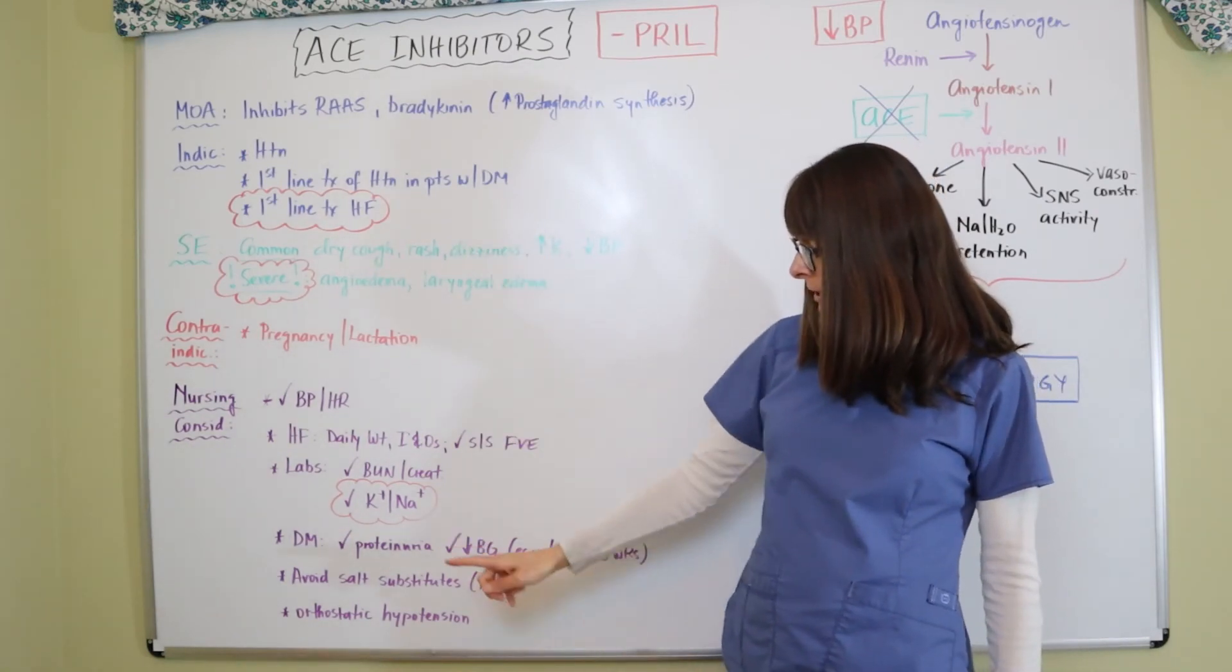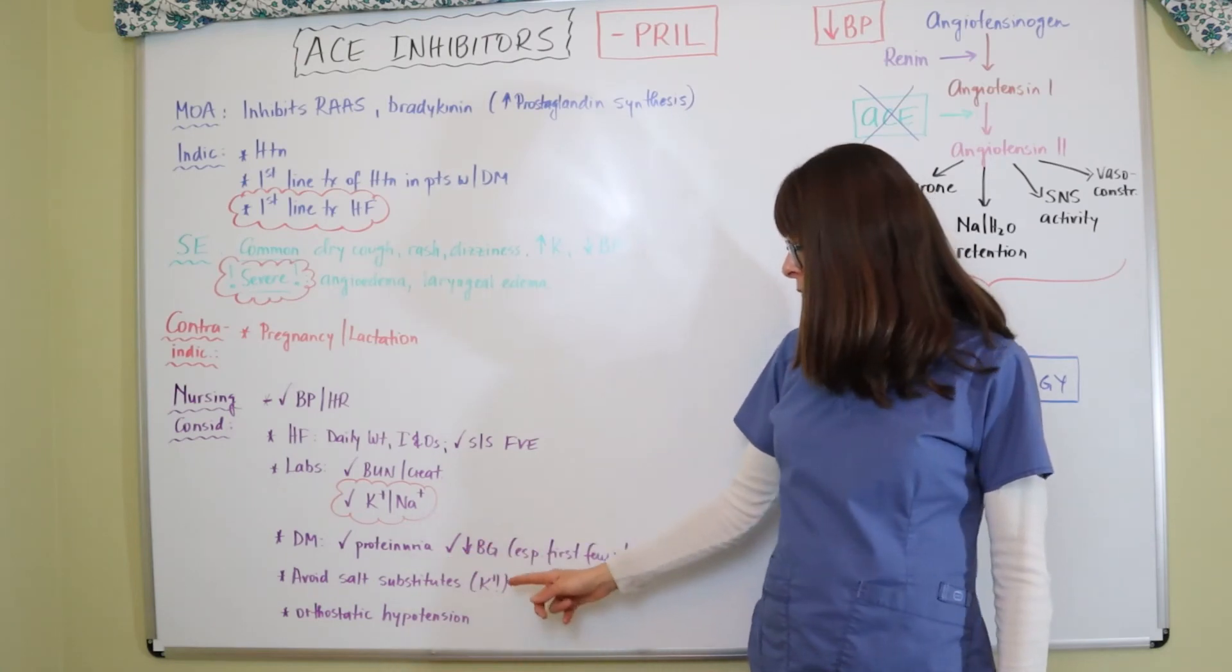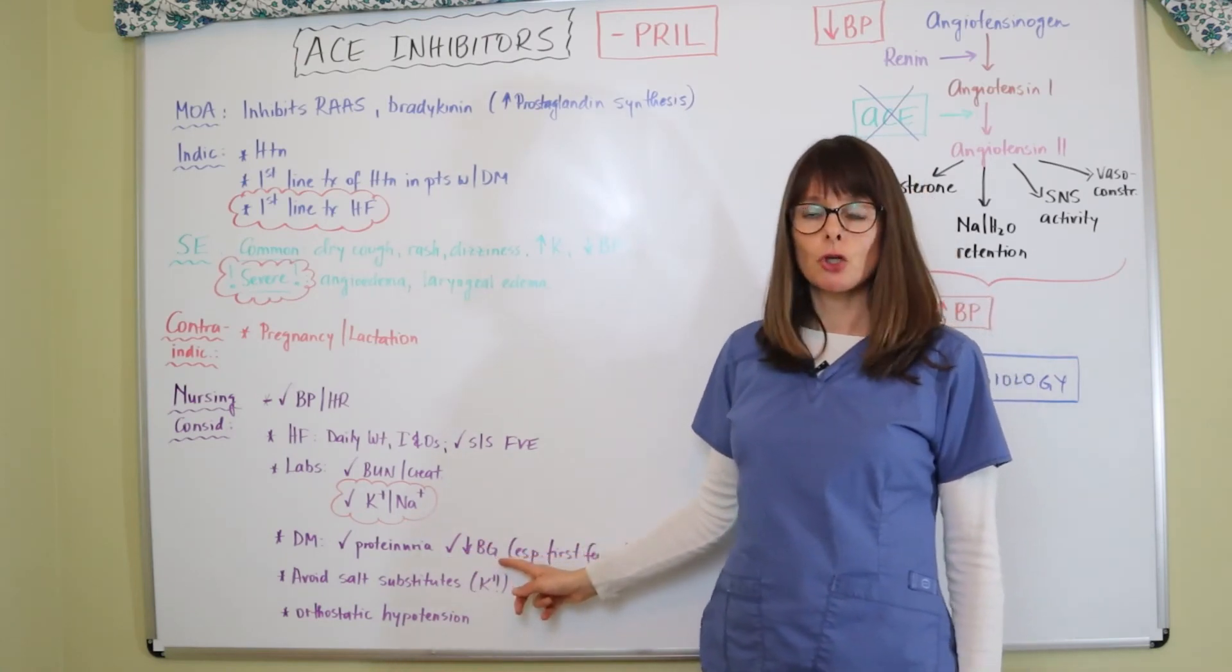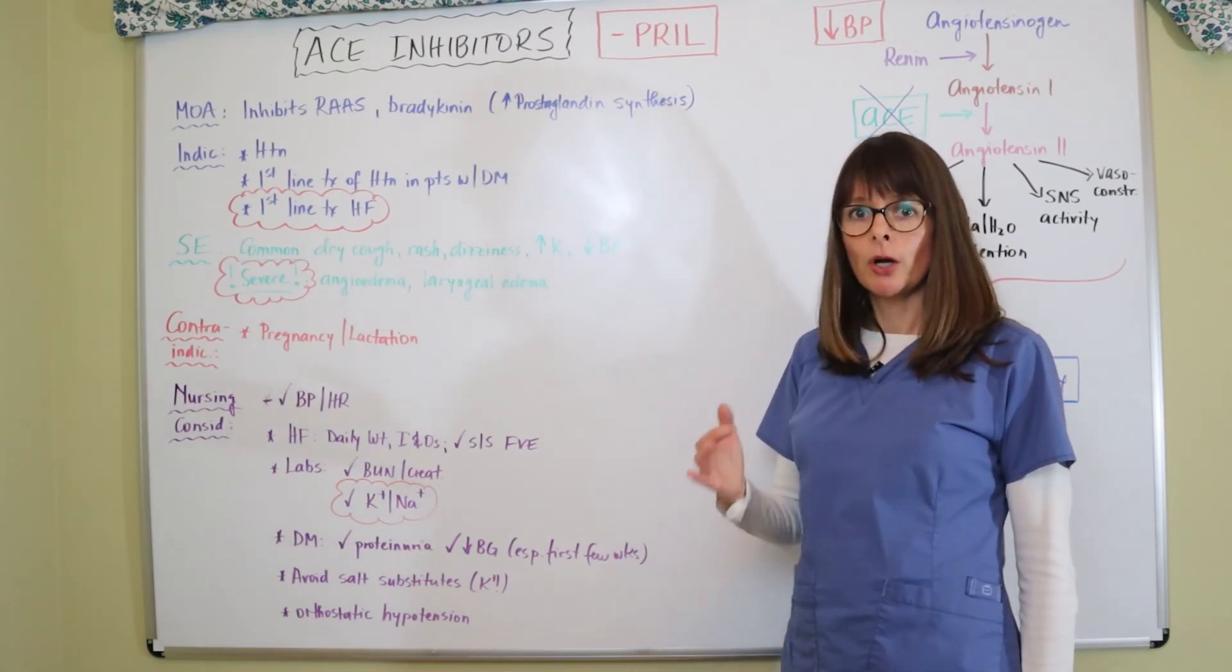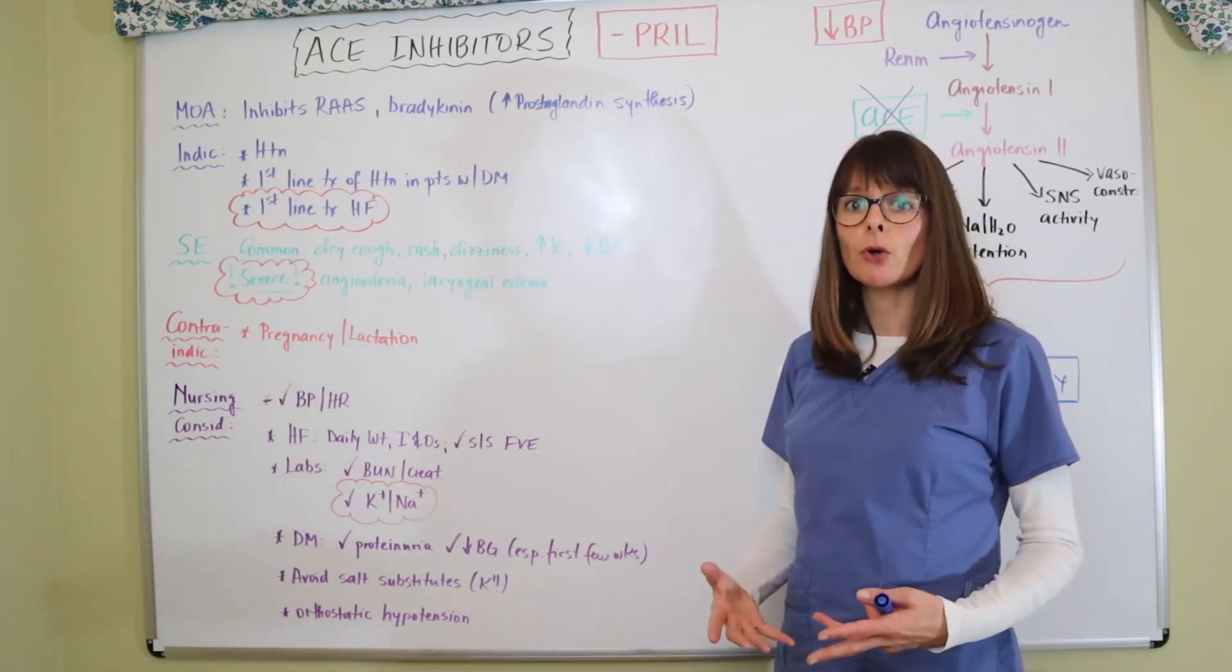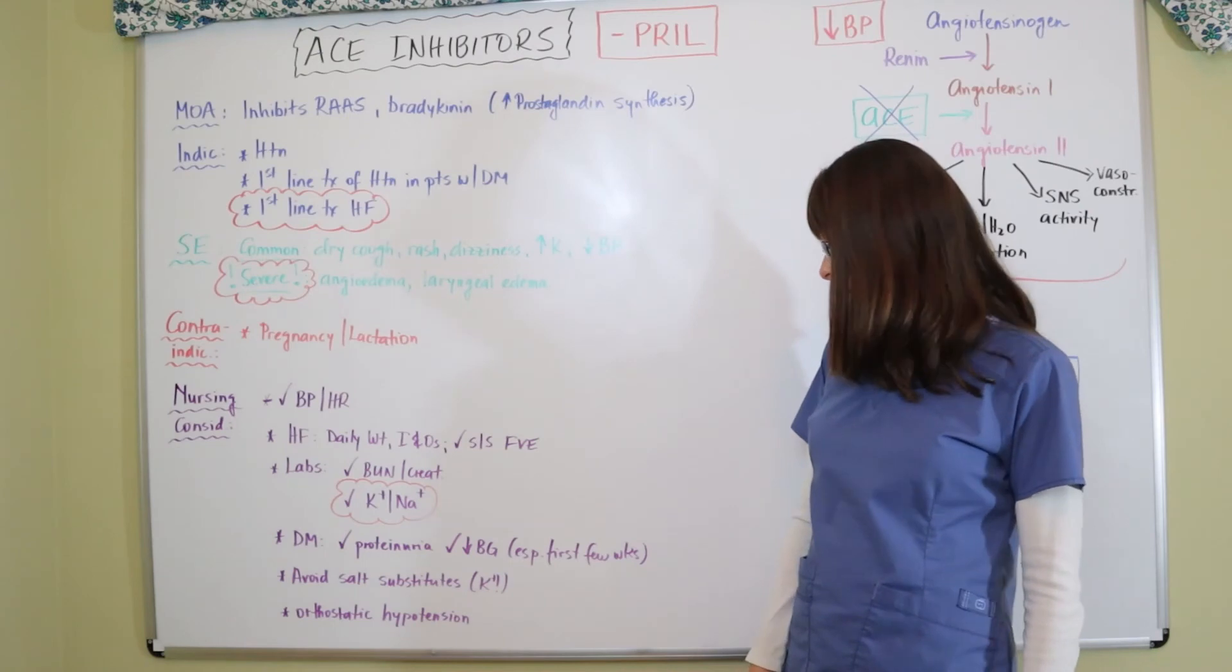And in diabetics, we also want to check the urine for protein as well as check their blood glucose levels because ACE inhibitors can cause hypoglycemia, especially if early in the treatment even if the patient is just being started.